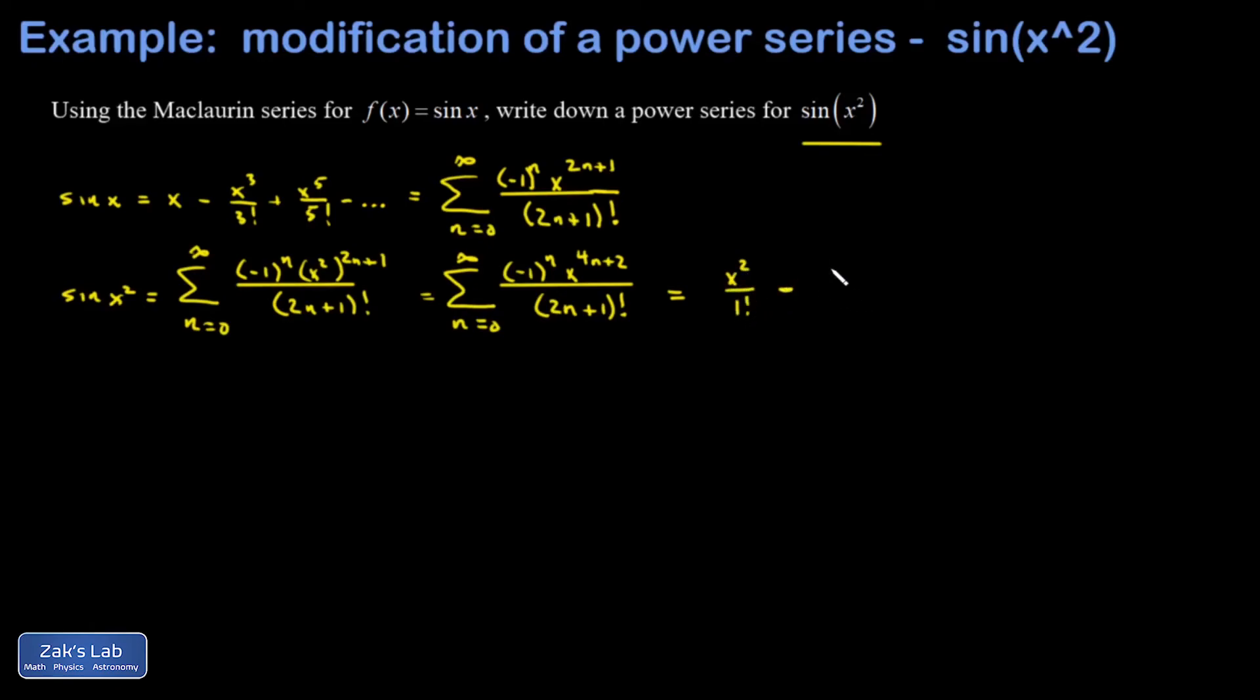I plug in n equals 1, and I get a minus sign on that term. And I get x to the 6th in the numerator, and 3 factorial in the denominator.